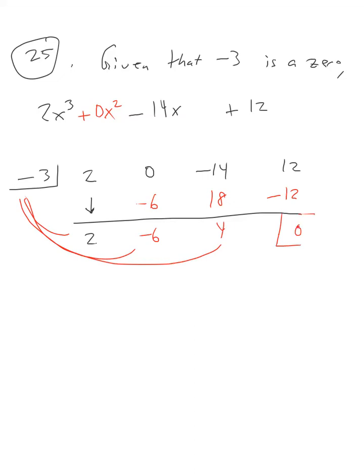Getting a remainder of 0 confirms that x equals negative 3 is a zero, and the polynomial reduces one degree lower to 2x² minus 6x plus 4. We're trying to set this equal to 0 and solve, and x equals negative 3 is our first confirmed answer.